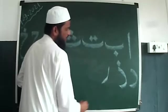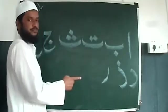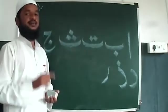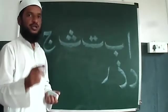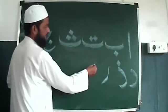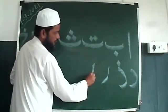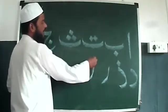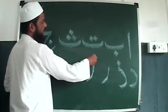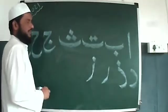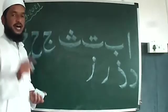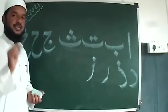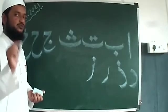Quarter circle: Ra. Ra for Ramadan, and Ra for Rajul (man). Quarter circle above the line, one dot: Za. Za for Zakat, and Za for Zahratul (flower).